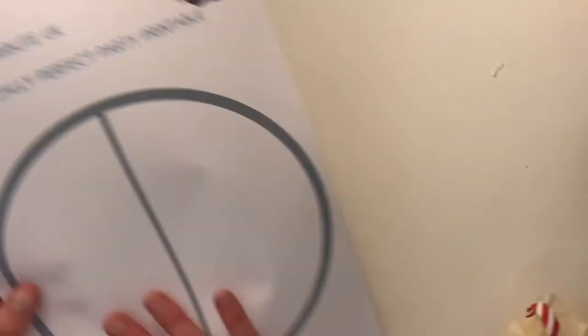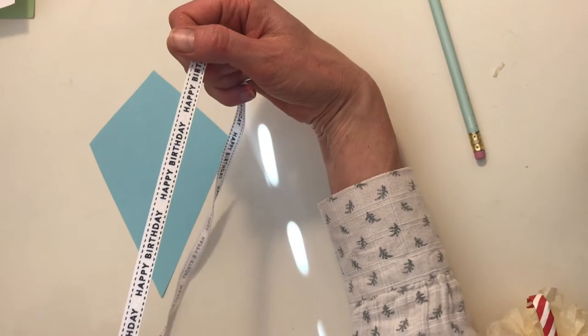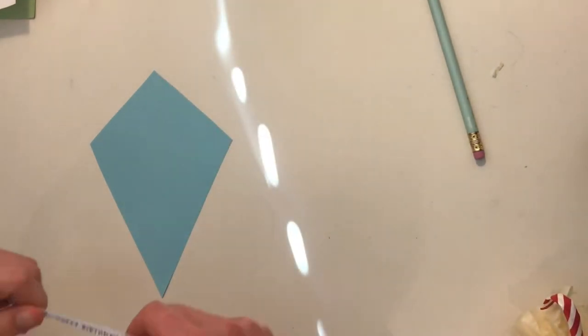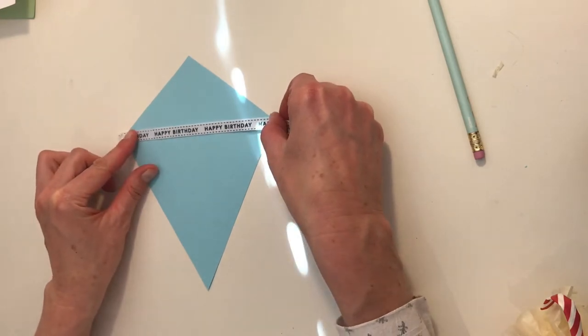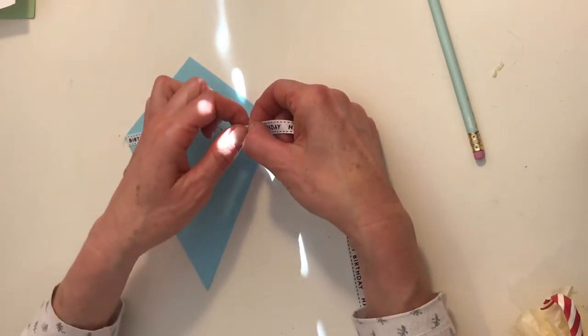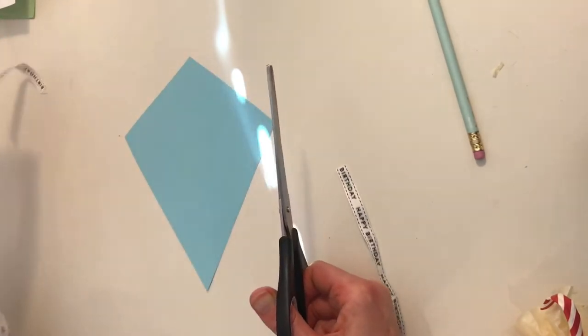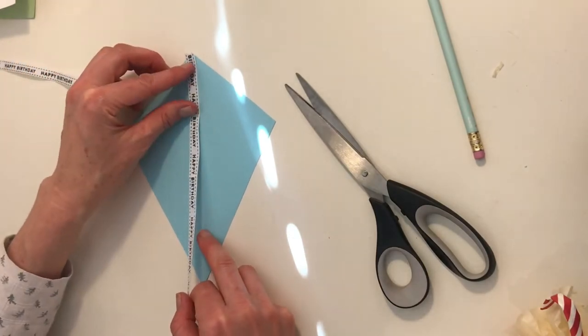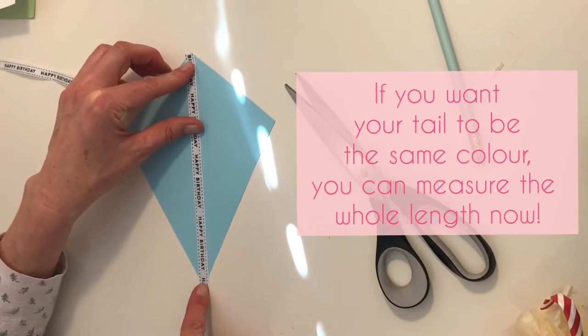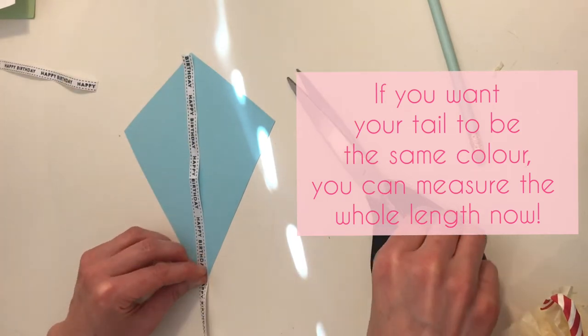And now it's time to use your ribbon. I've very luckily got some happy birthday ribbon here, but you can have whatever you like. So I'm going to measure across here and cut that length, and then I'm going to do the same with all the different lengths. That's the front. This is the bit that we're going to see on the front of our kite. There we are.